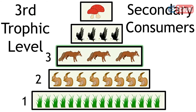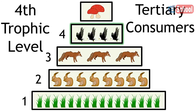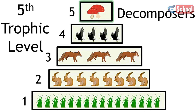The third trophic level is secondary consumers, which in this example is the fox. Followed by the eagle, which is the tertiary consumer, level 4. We've included the decomposers as trophic level 5. In this example it's the fungi.